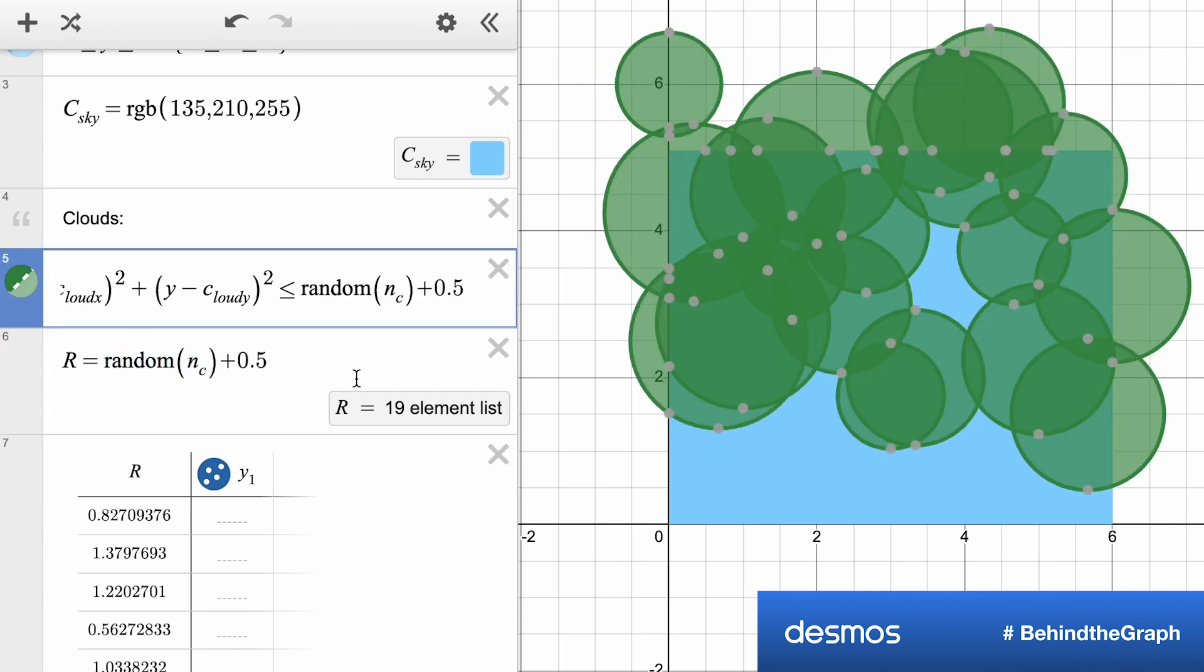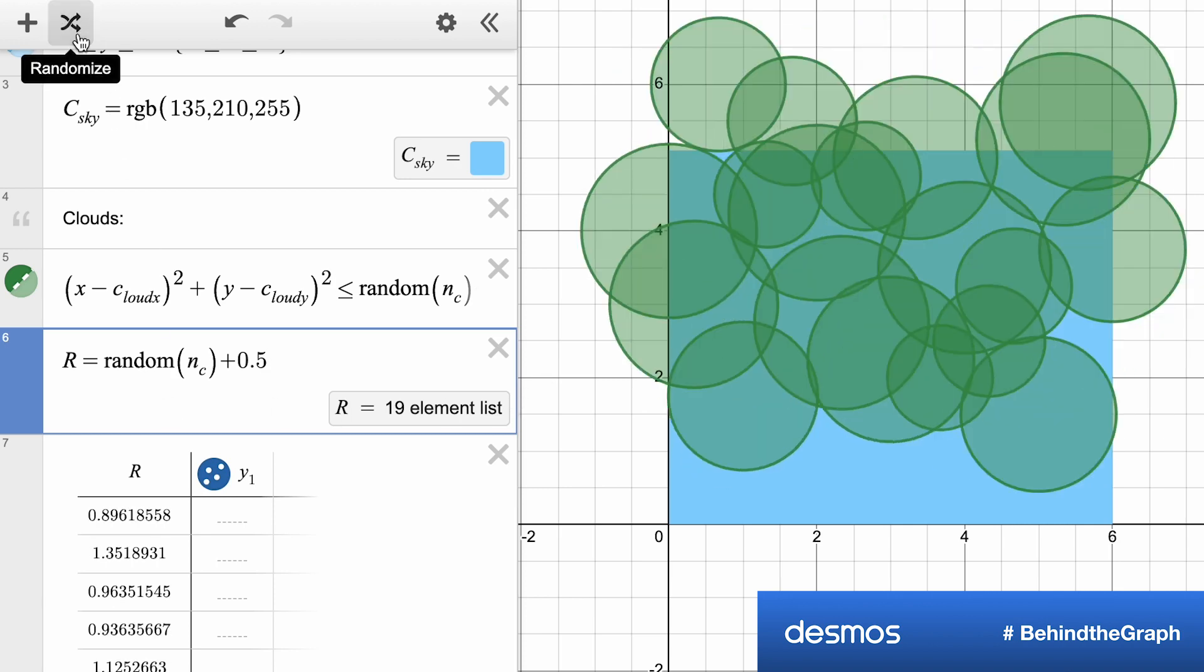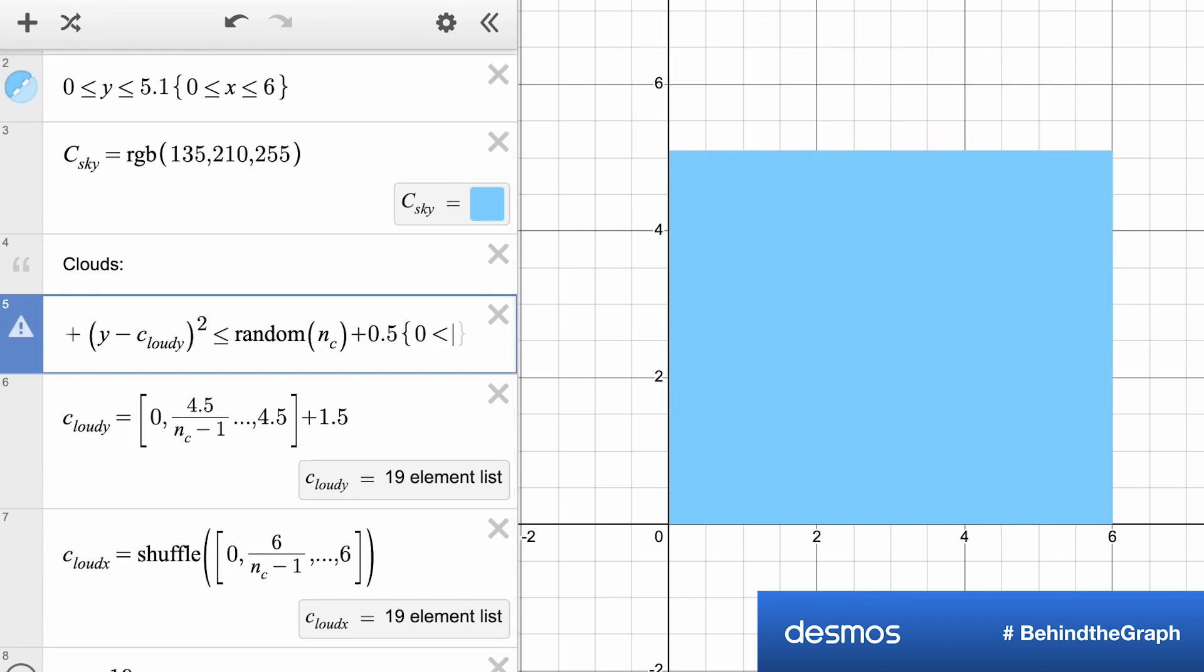I'm just going to copy and paste that new random function at the end of my equation. So now by hitting that random button at the top, I can get these random sizes of circles, but now these circles are kind of overhanging this box.